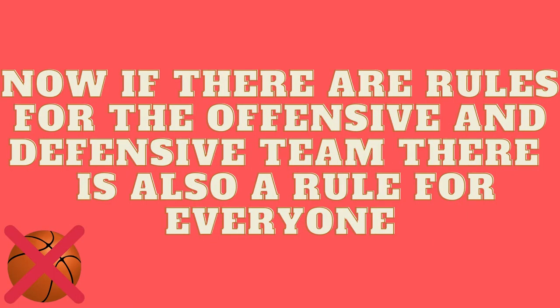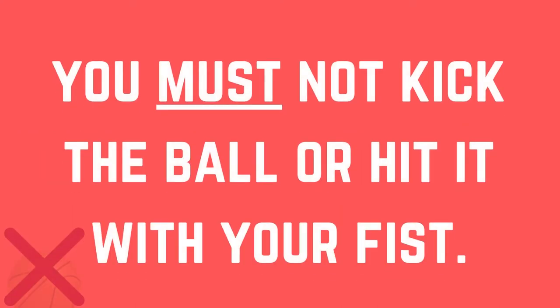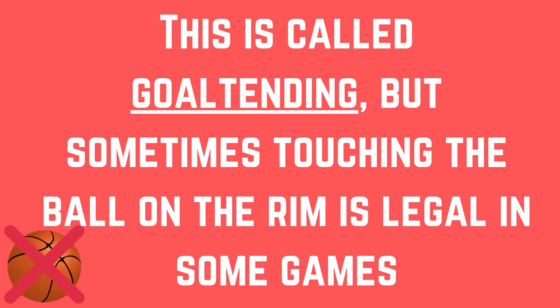If there are rules for the offensive and defensive team, there is also a rule for everyone. Although the foul rule is described above as a defensive rule, it applies exactly the same to all players on the court, including offensive players. You must not kick the ball or hit it with your fist. And no player can touch the basketball while it is traveling downwards towards the basket or if it is on the rim. This is called goaltending.